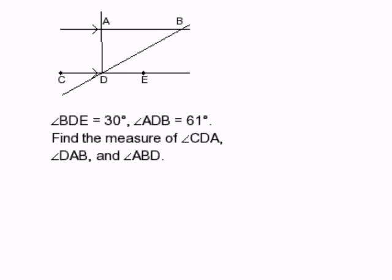How to find missing angles when we have multiple intersecting lines, and one of them, pairs of lines, are parallel.